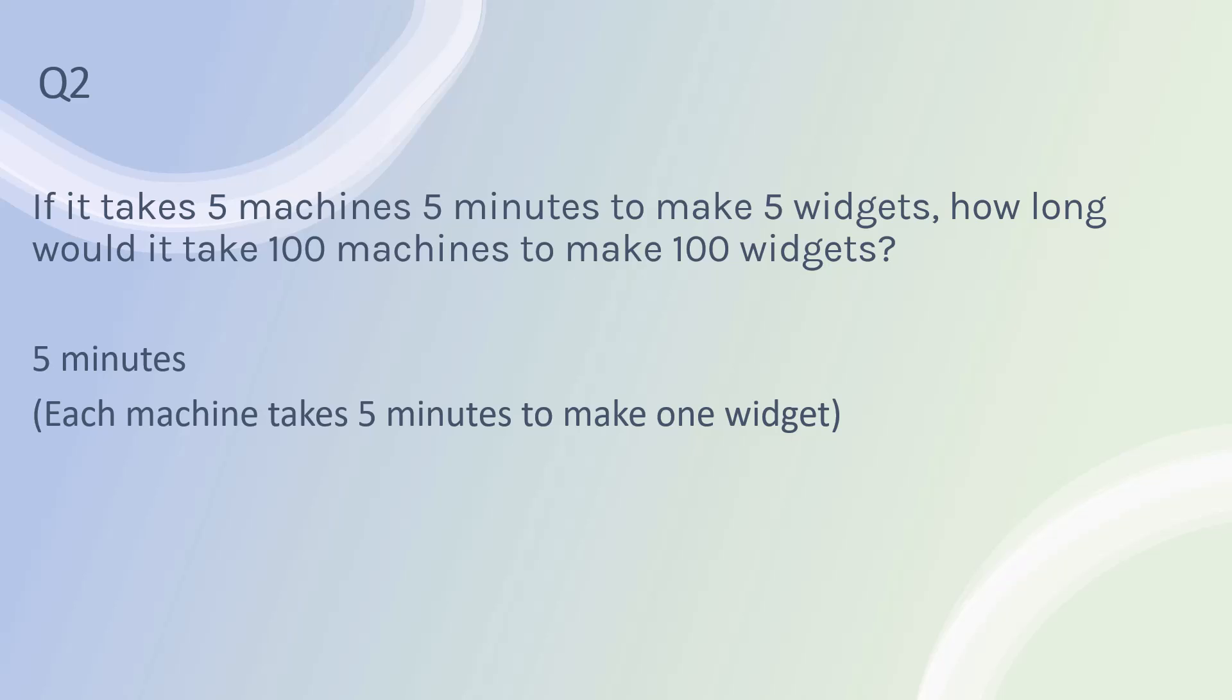The common thing that people will do wrong is they'll see five, five, five, and they'll think it must be hundred, hundred, hundred. But each machine, if we think about how long it takes one machine to make one widget, and this is assuming that there's no weird interactions or things, just the simplest possible case. One machine can make one widget in five minutes.